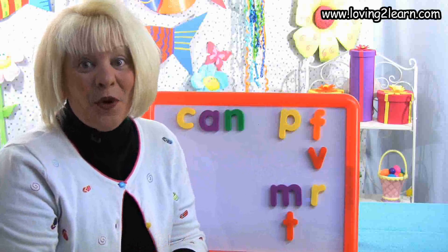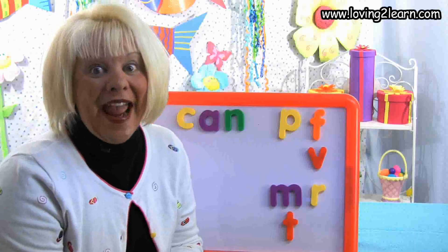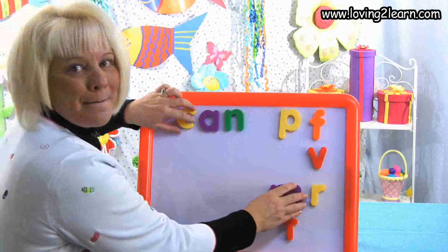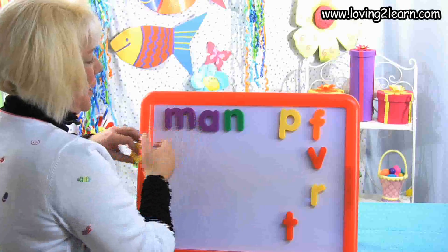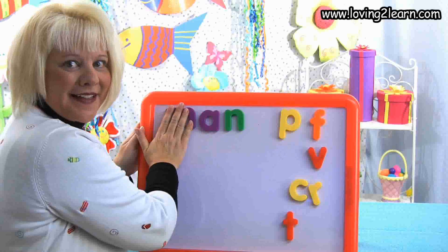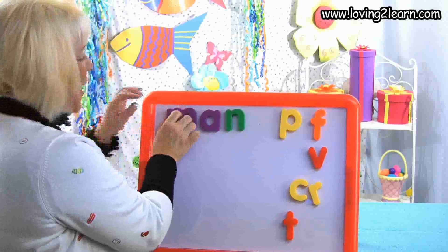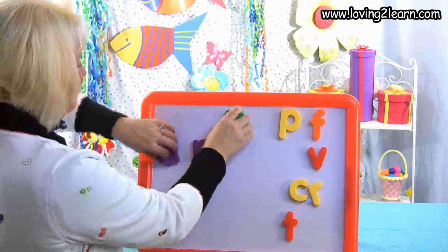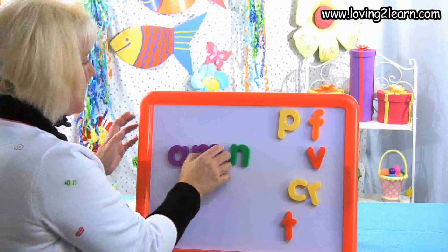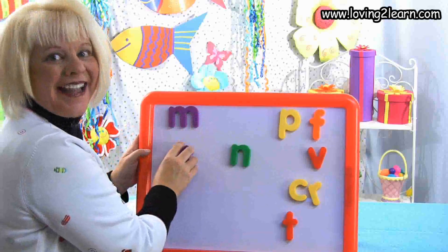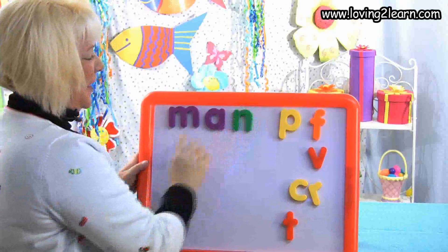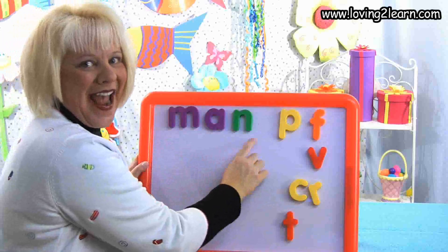I want to make the word man. M-M-M — that's right, M. I put it at the beginning of the word: M-AN. What chunk is in the word man? AN. I'm mixing it up. Let's make that word — M-M-M, M-A-N. Excellent! What's the word? Man.